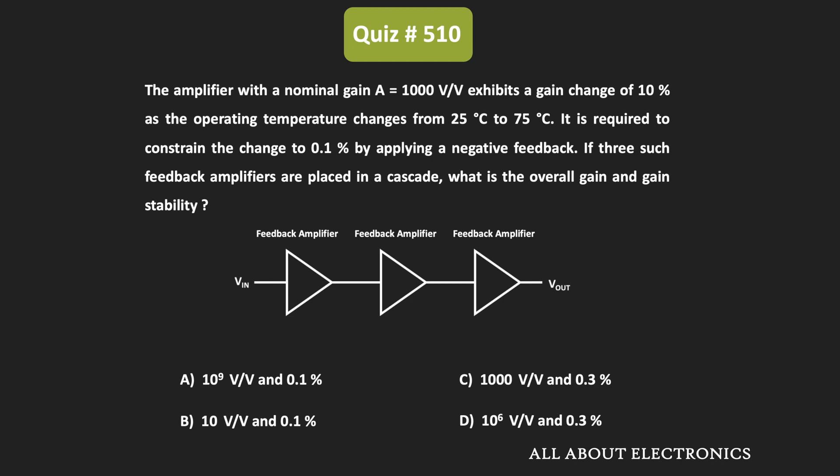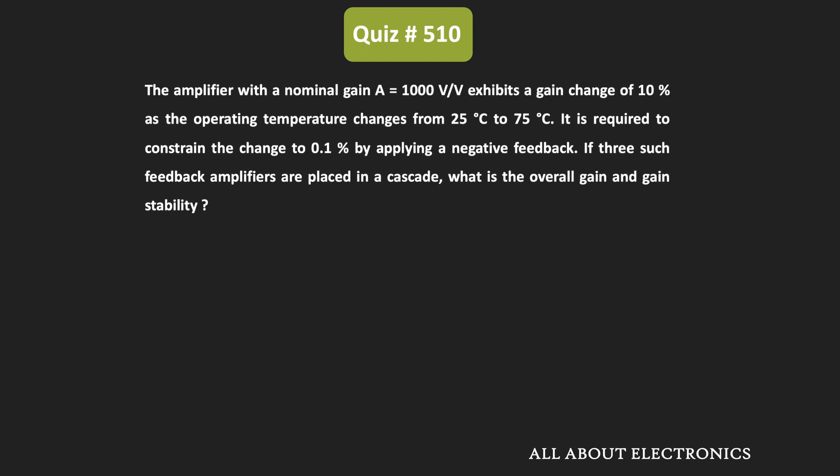So in the open-loop condition, the change in gain for the amplifier is equal to 10%. We can say that δA/A = 10%, or 0.1. And with feedback, the required change is equal to 0.1%, so dAF/AF = 0.1% or 0.001.